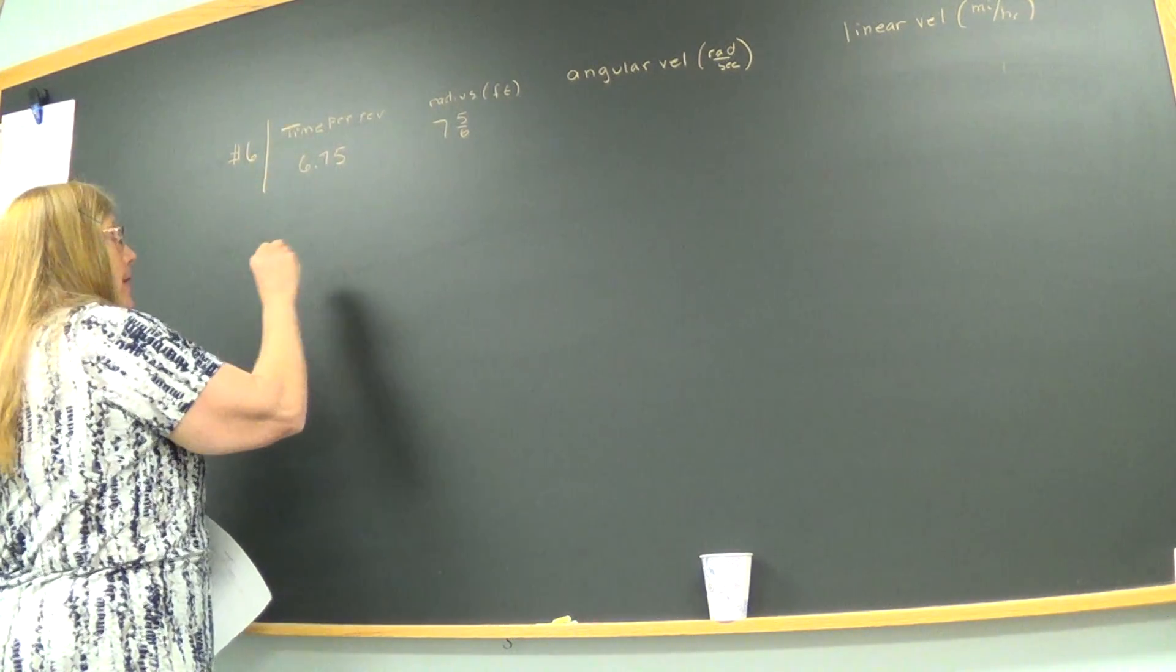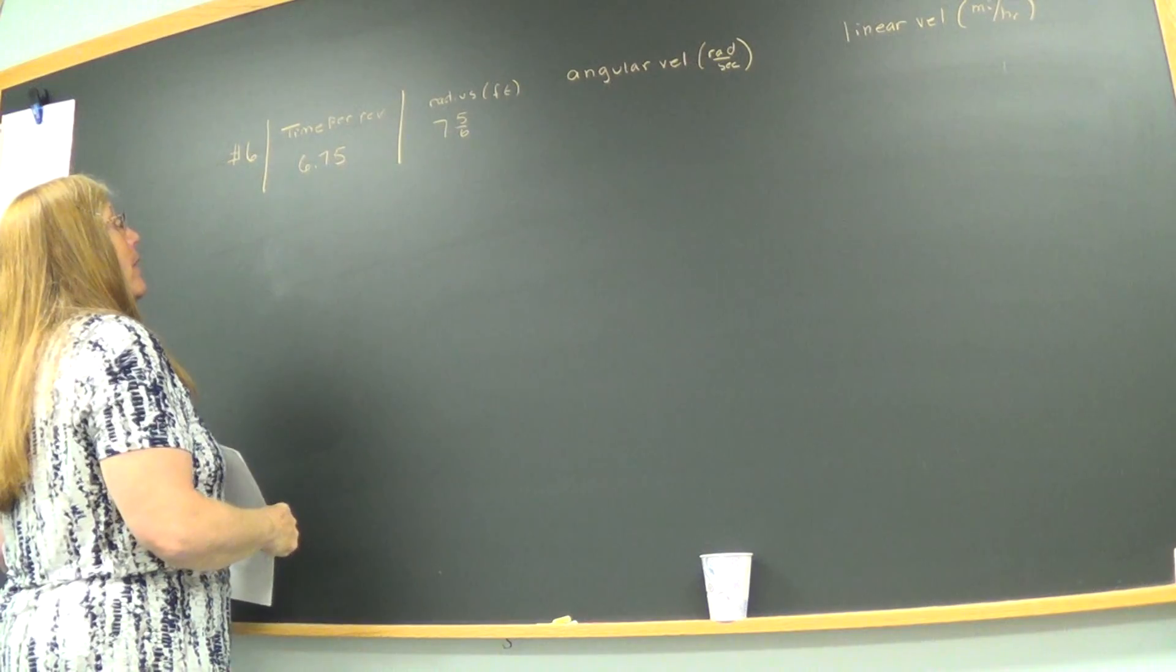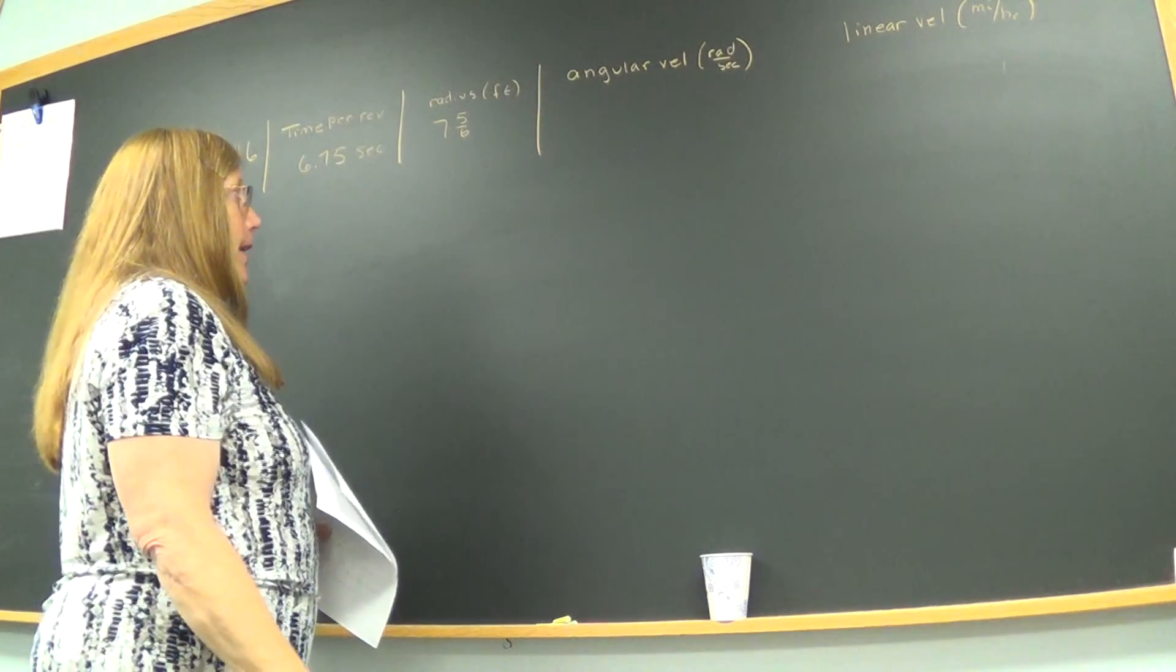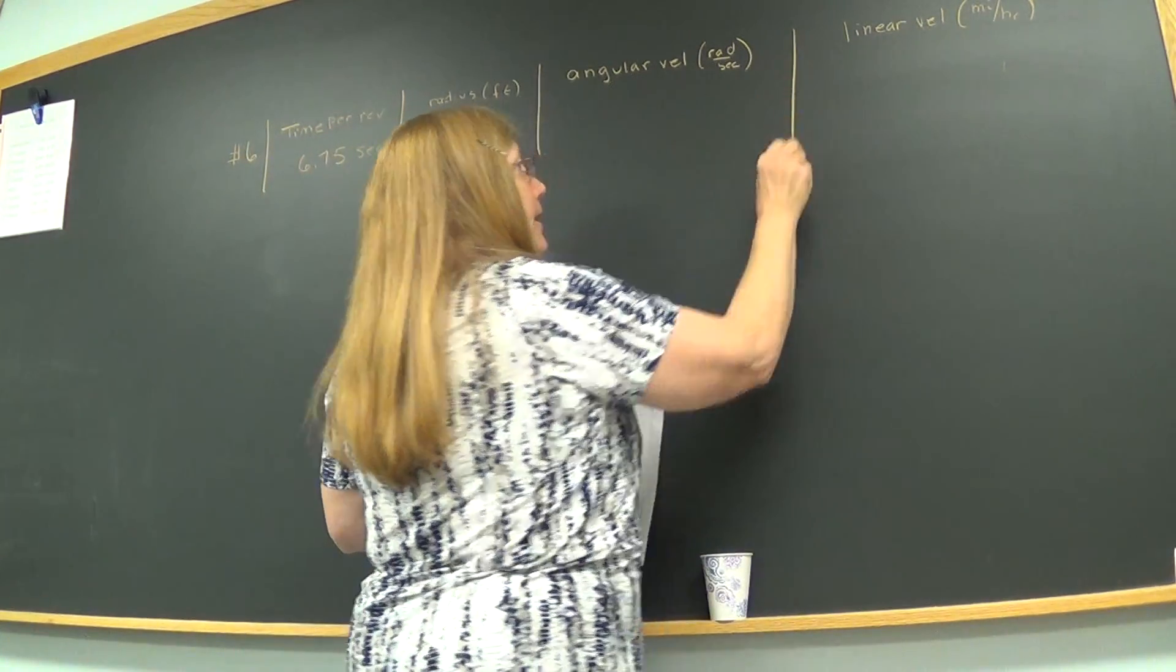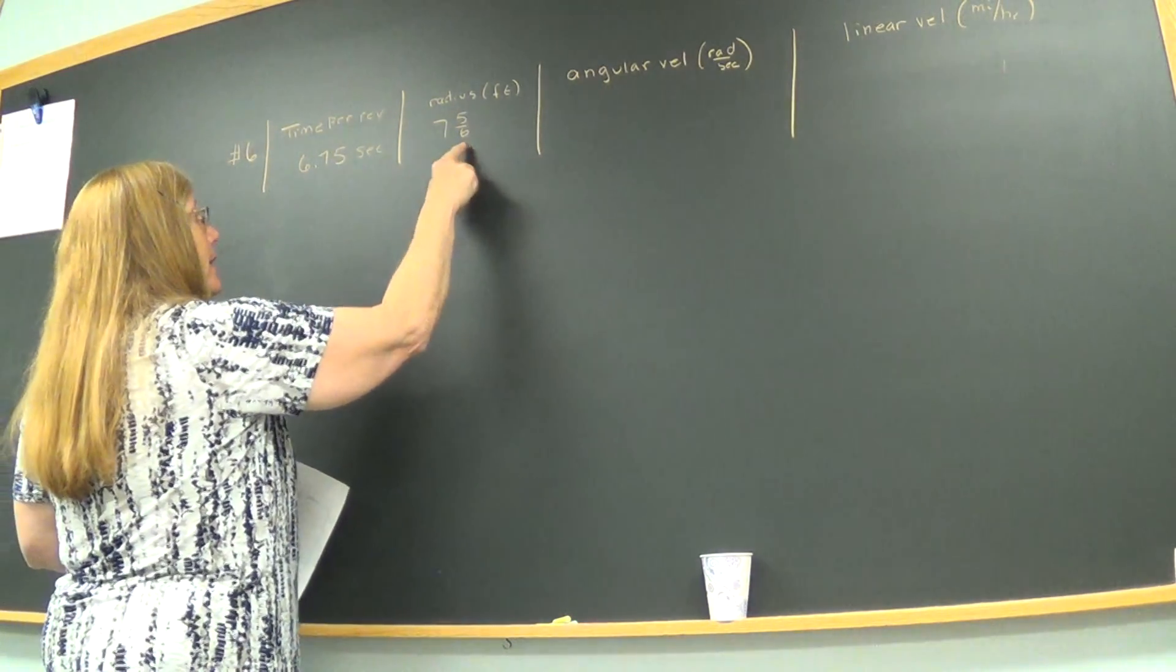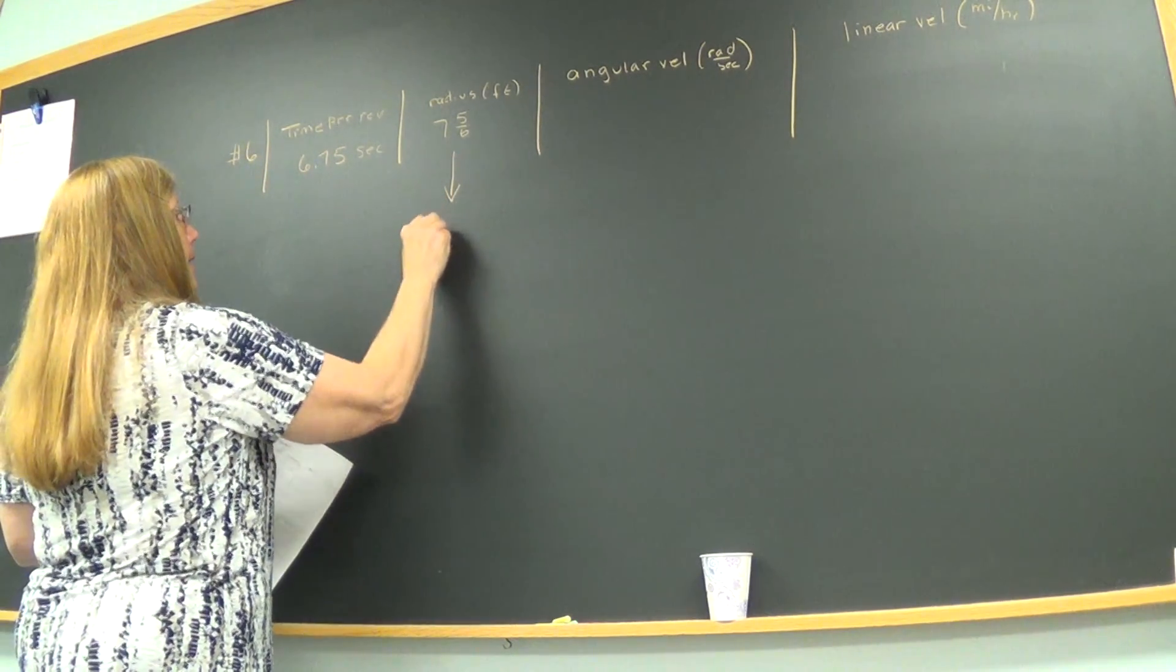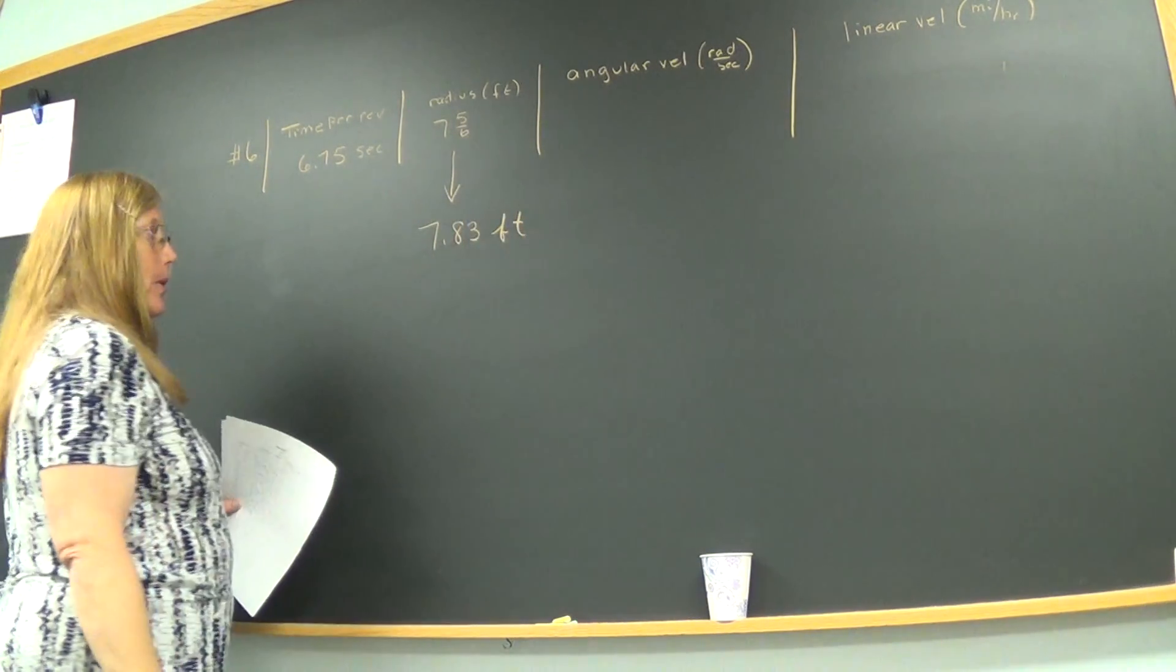I'm looking at person number 6 who went around in one revolution in 6.75 seconds and the radius was 7.56 feet and I'm looking for the angular velocity and the linear velocity. I'll start here and I'll change that 7.56 to a decimal. 5 divided by 6 was 0.83. So that's the number I'm going to use.